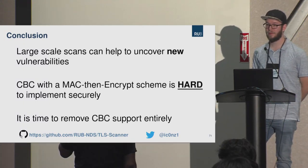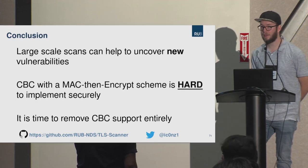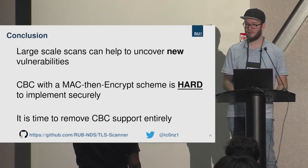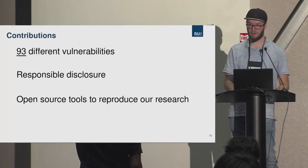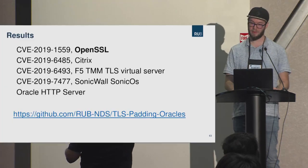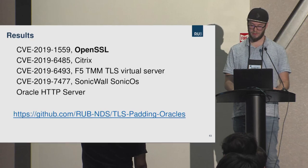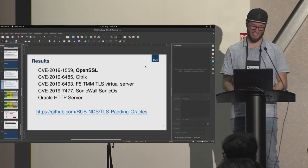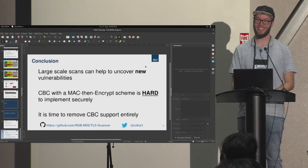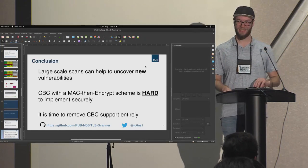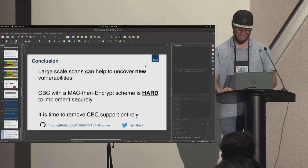An attendee named Saravanen noted a mistake on the results slide: CVE number 6493 is probably incorrect and should be 6593. Robert acknowledged the correction and noted they would fix it on their website as well. The session ended with thanks.